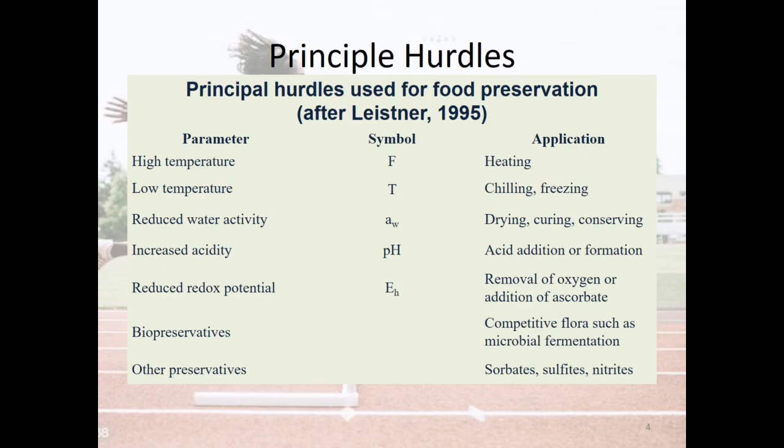The third hurdle is reduced water activity, expressed by the symbol Aw, with applications including drying, curing, and conserving. The fourth hurdle is increased acidity expressed by pH, with applications being acid addition or formation of acids in food products. The fifth hurdle is reduced redox potential, with the application being removal of oxygen or addition of ascorbate.